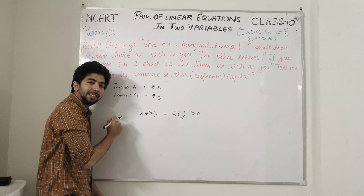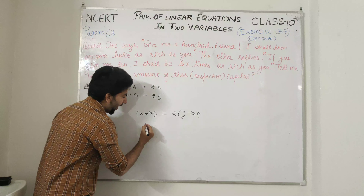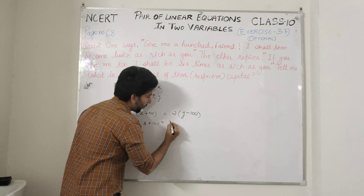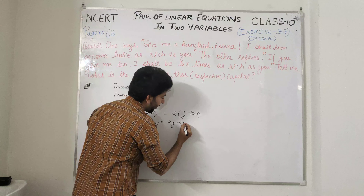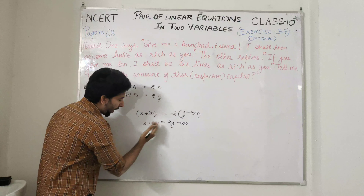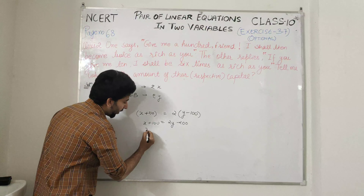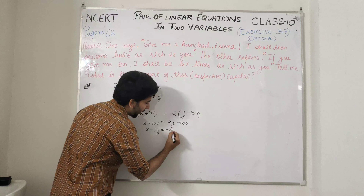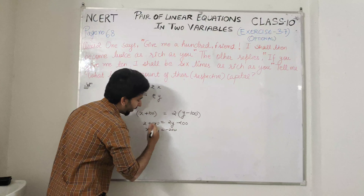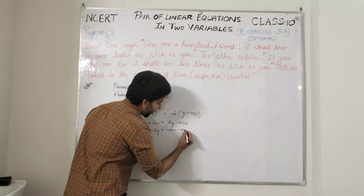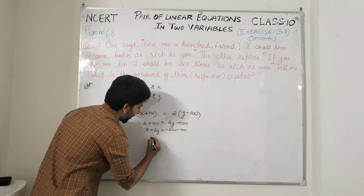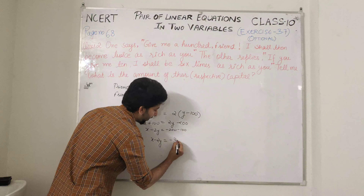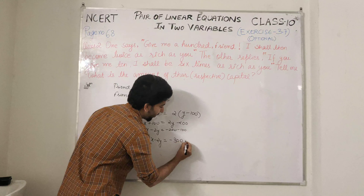यह होगी हमारी first equation: X plus 100 equal to 2(Y minus 100). Simplify करो: X plus 100 = 2Y minus 200, तो X minus 2Y equal to minus 300. यह होगी आपकी first equation.